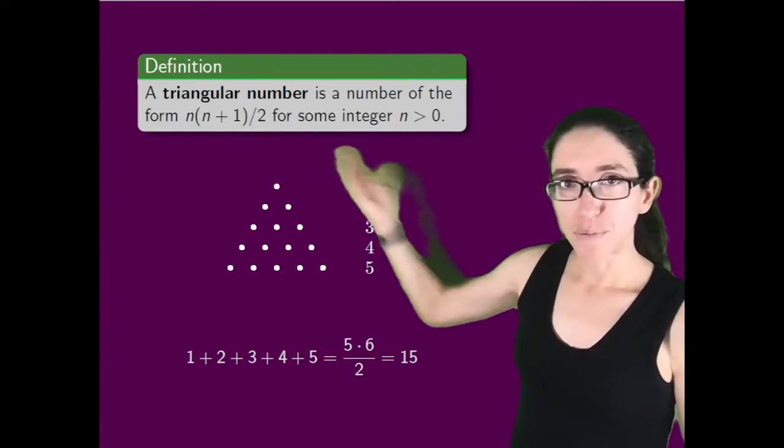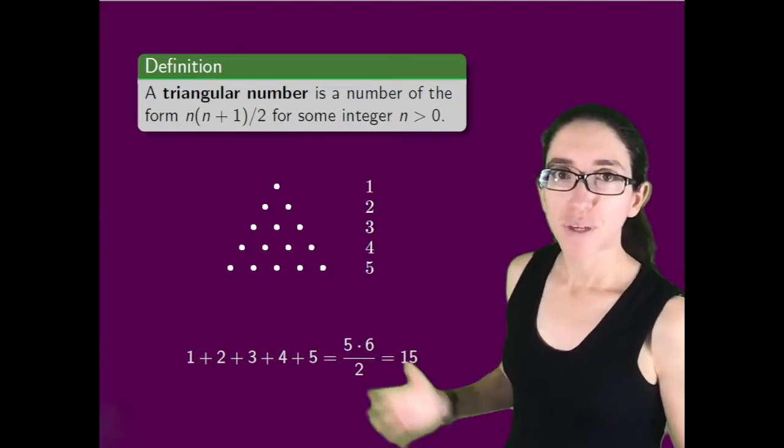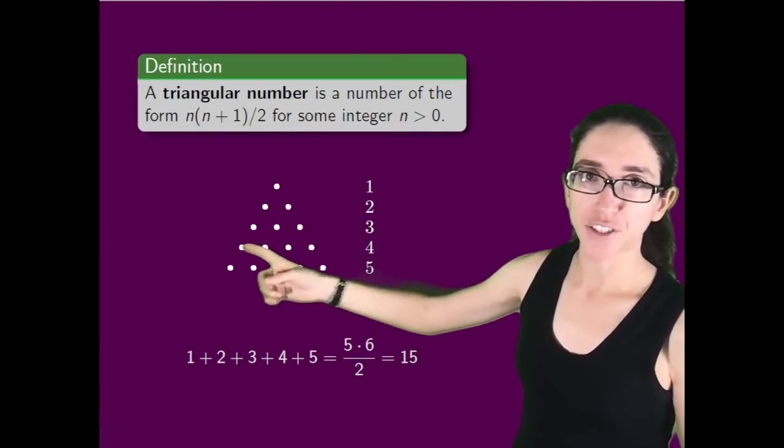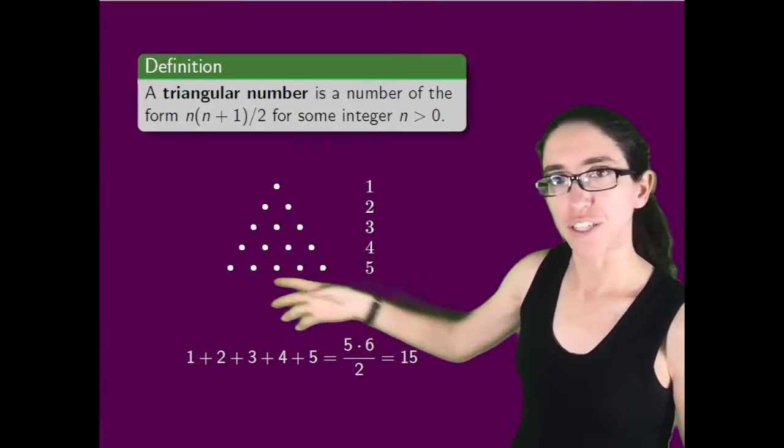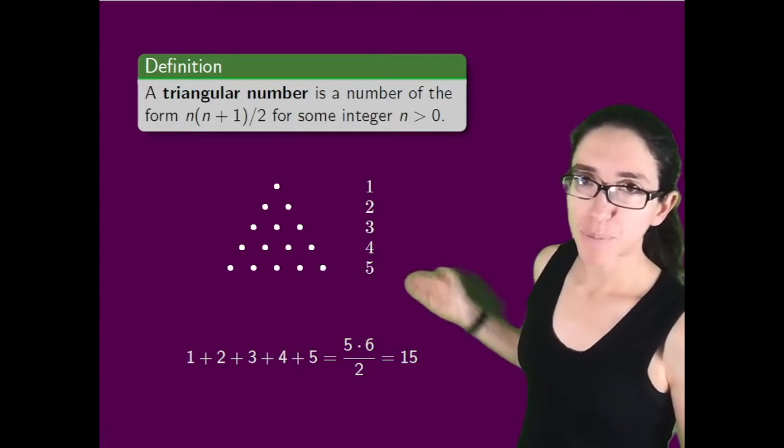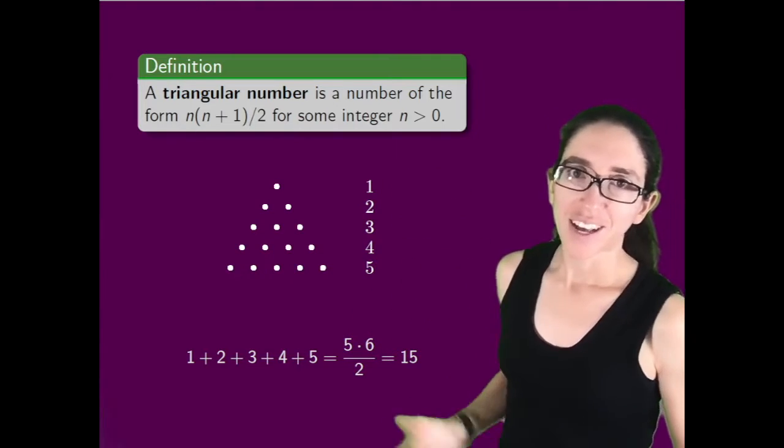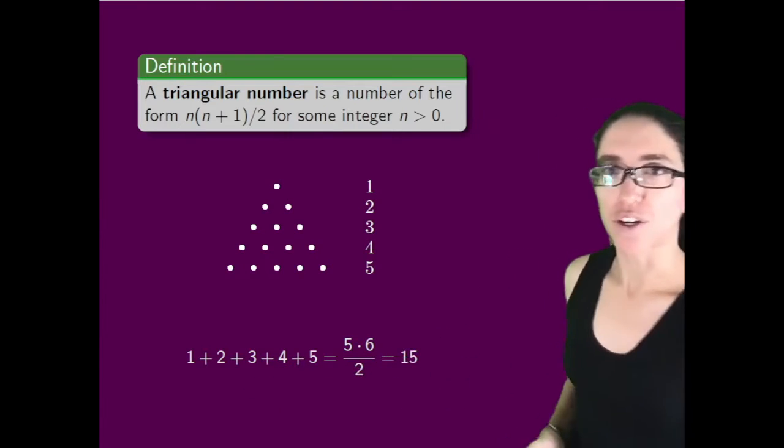Finally, these numbers n(n+1)/2 are called triangular numbers, because if you draw dots in a triangular grid, there's one in the first row and two in the second and three in the third and so on. To count how many dots are in a triangular grid, you add up the numbers from one up to a certain point. So this formula, n(n+1)/2, is also called a triangular number.